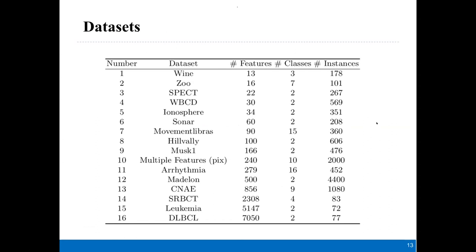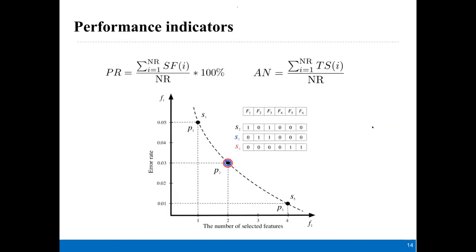For the datasets, we use 16 different datasets with different features, classes, and instances. In addition to hypervolume and IGD to show performance, we also use two additional indicators: PR (percentage rate) and AN. The PR means the percentage rate — how often the algorithm can find multiple different feature subsets with the same fitness or objective values.